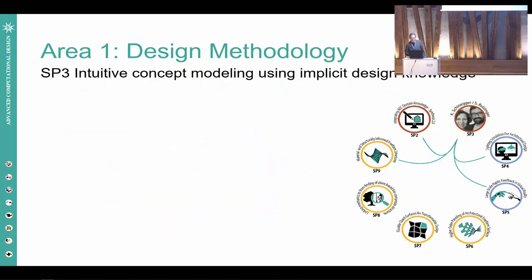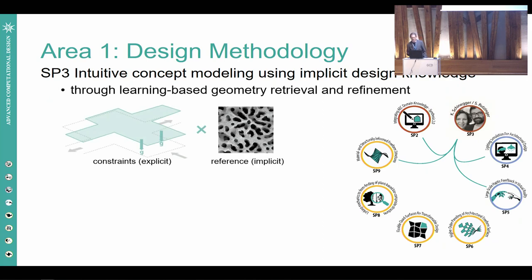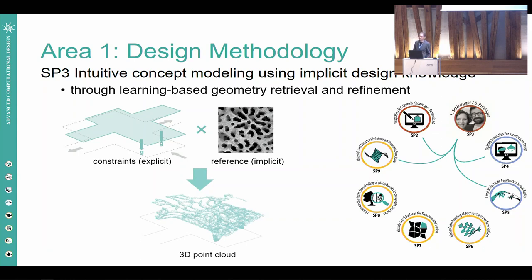Sub-project three develops a new workflow for intuitive concept modeling using implicit design knowledge. Explicit knowledge in the form of constraints as well as implicit knowledge in the form of a 2D image are given as input. Using transfer learning, a machine learning approach, the system retrieves a 3D point cloud that adheres to both the constraints and the example design, aiming to move away from iterative NURBS modeling.